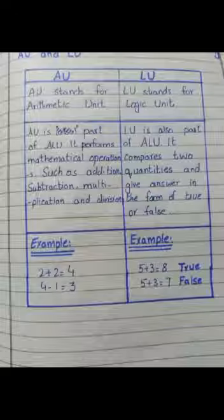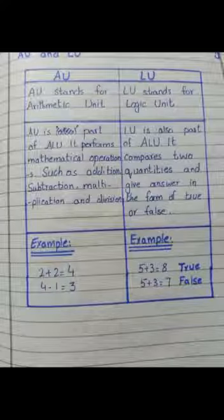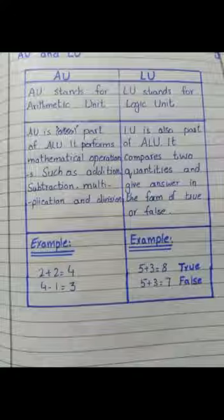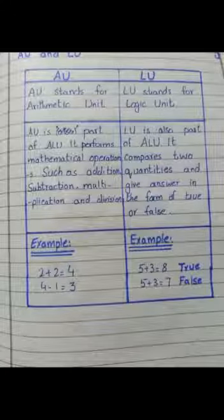AU، ALU کا حصہ ہے۔ ALU کا مطلب Arithmetical Logical Unit ہے جو ریاضی کی کاروائیوں کو سرانجام دیتا ہے، جیسا کہ جمع، تفریق، ضرب اور تقسیم۔ مثال کے طور پر: 2 plus 2 is equal to 4، اور 4 minus 1 is equal to 3۔